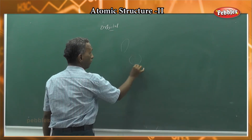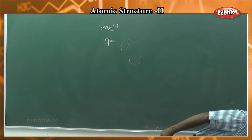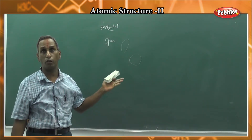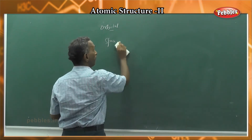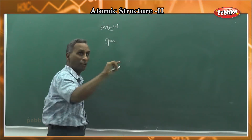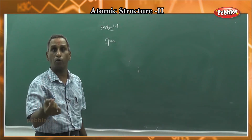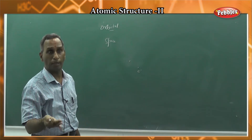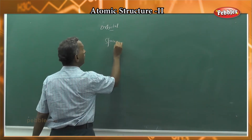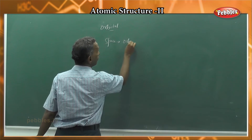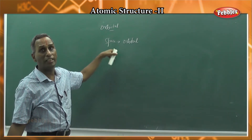Space is three-dimensional, so three dimensions give us a sphere or lobes — whatever the case — as the region of space where the probability of finding the electron is maximum. Probability lies between zero and one, and the points where probability is maximum are selected; that region is the orbital. So the orbital is the space around which the probability of finding the electron is maximum.